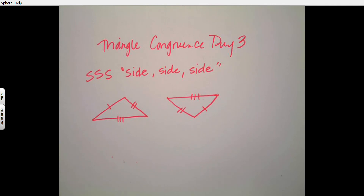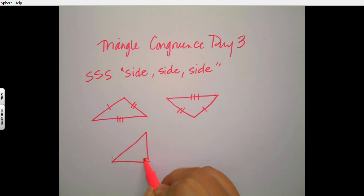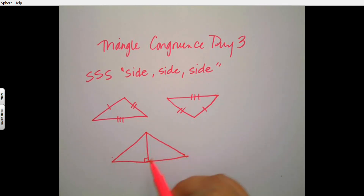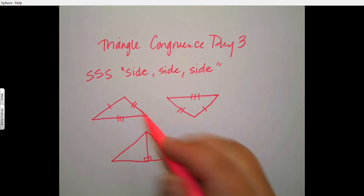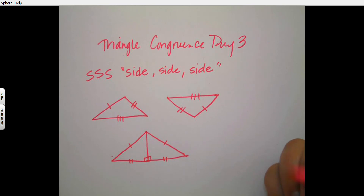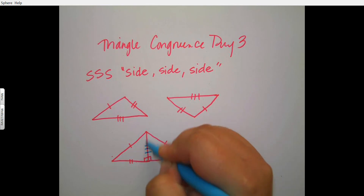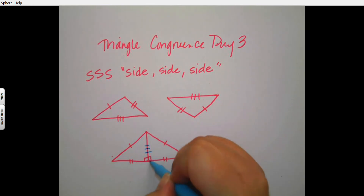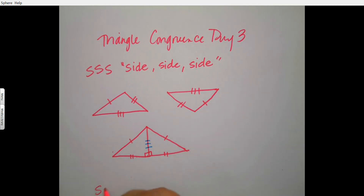Most of the time the hash marks will already be there and you just have to look at what's given. There are some tricky hidden ones — sometimes the triangles share a side. You have two triangles with what looks like only three markings, but there's a secret marking because they share a side, so it is congruent by side-side-side.